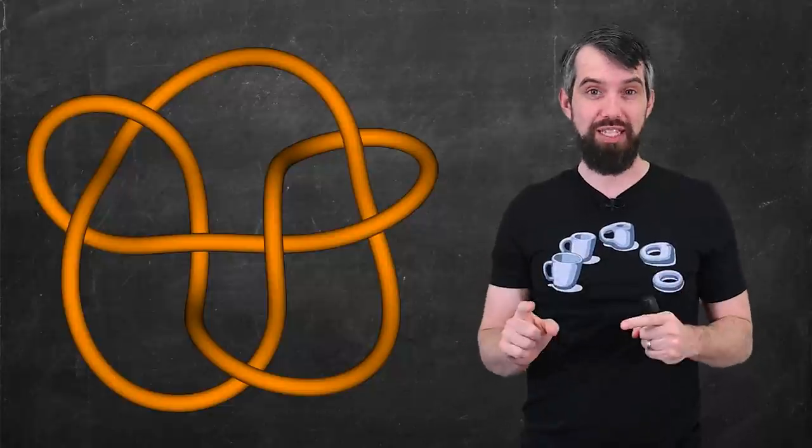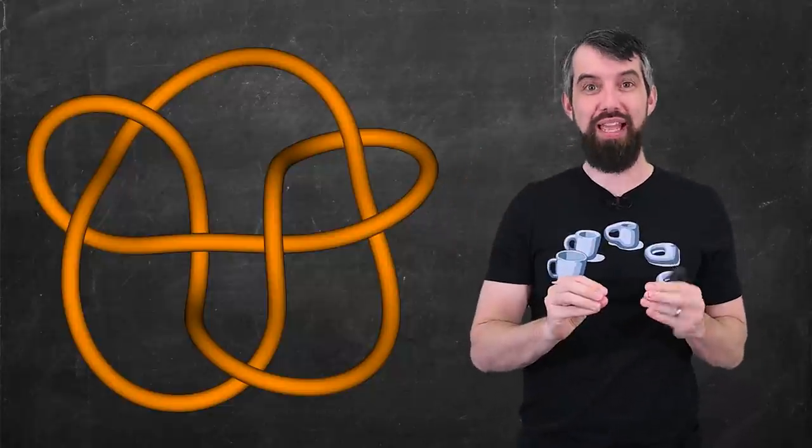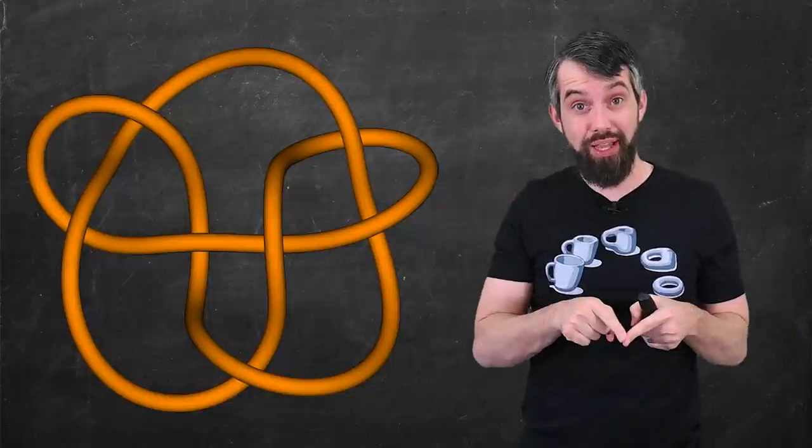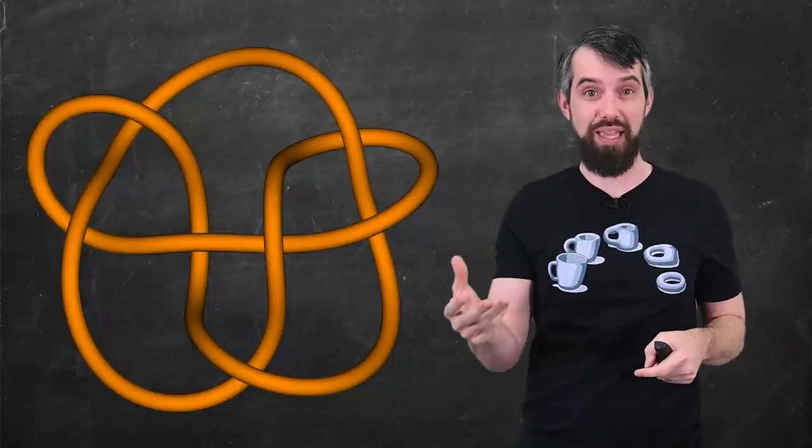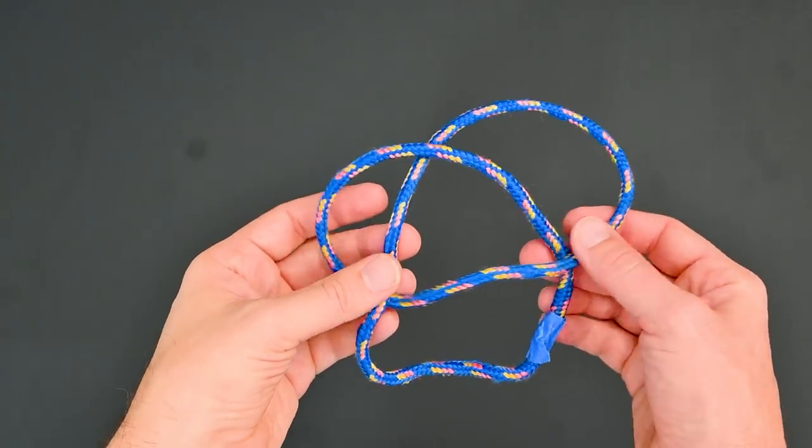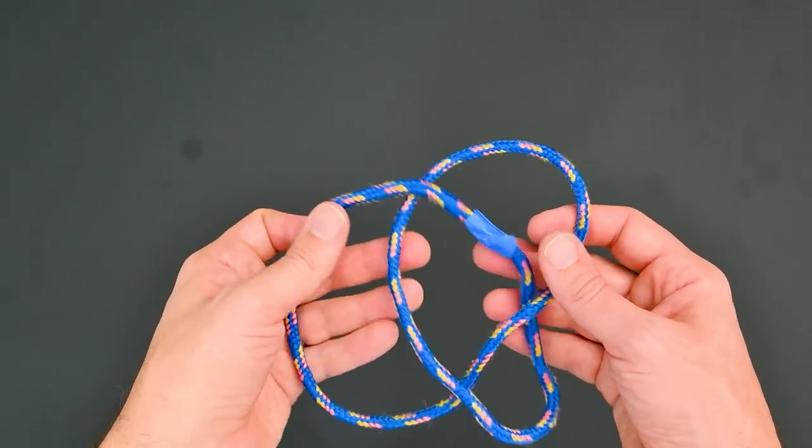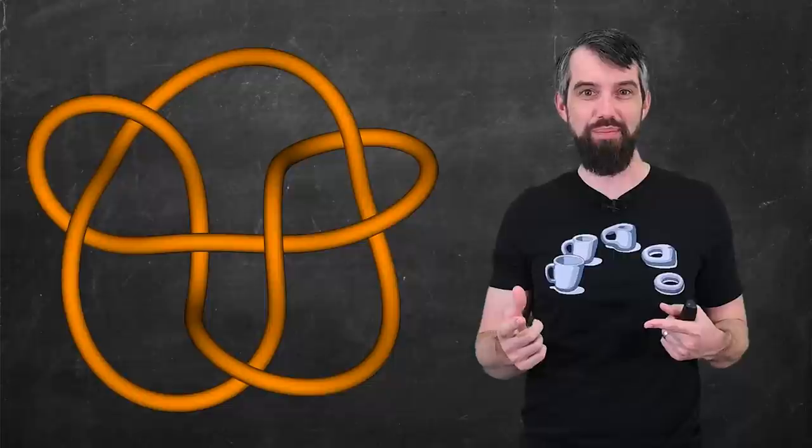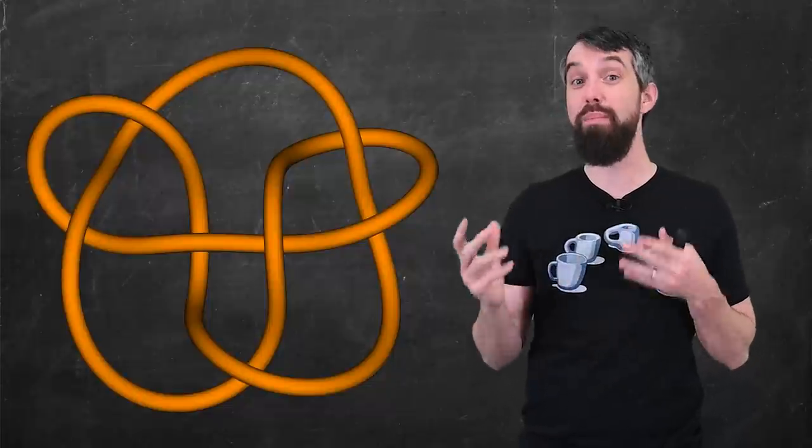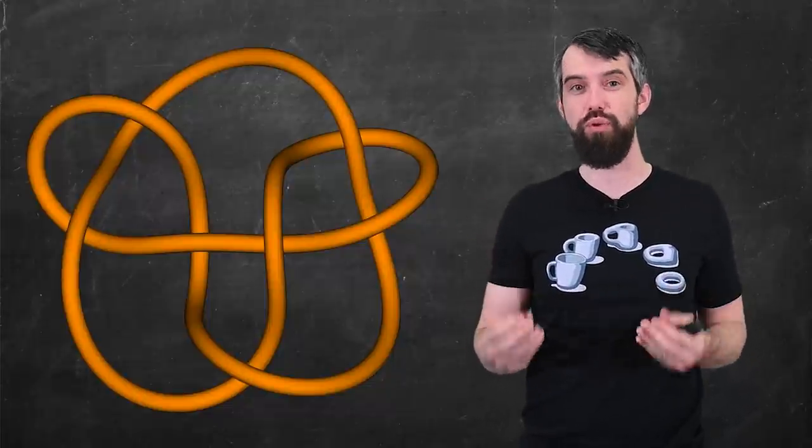To be a bit more precise, a knot like this one is a continuous embedding of a circle into three-dimensional space, together with the provision that I'm allowed to wiggle it around a little bit. I can't cut it.